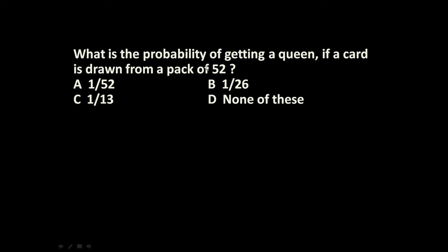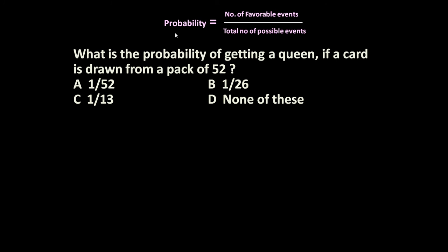In a pack of 52 cards, if we draw one card, what is the probability of getting a queen? The formula used to calculate probability is: probability equals number of favorable events divided by total number of events.